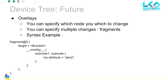The device tree compiler mainline doesn't support overlay compilation — it's only supported in some forks distributed for example with the Raspberry Pi. The discussion is ongoing and not really formalized.